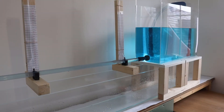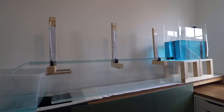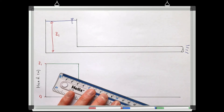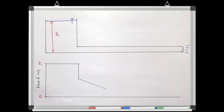If we imagine a head tank feeding a pipe, we can draw the total energy line for this system using the theory we looked at in lesson 3. We'll have a constant level of total pressure head in the tank, equal to the depth of water in the tank. We'll then get a sudden drop in energy due to local losses as the pipe exits the tank, and then as the fluid moves down the pipe we'll get a continuous loss due to friction, viscosity and turbulence.